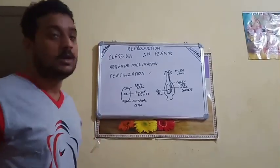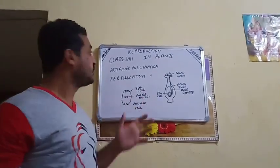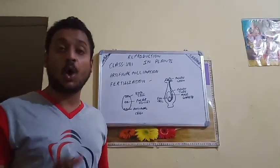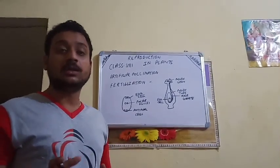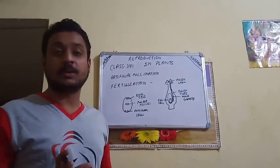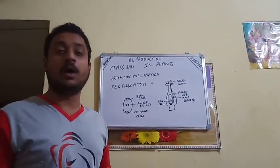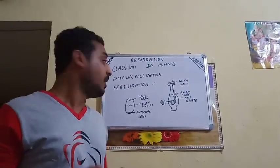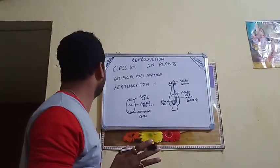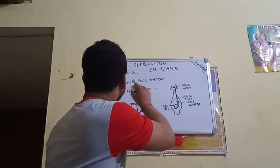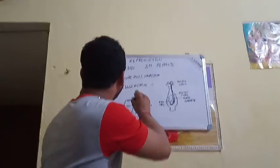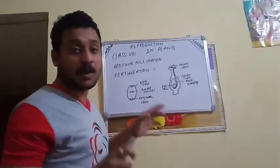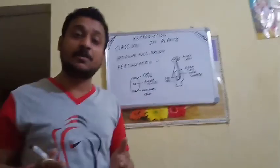A very good evening to you all. This video is for class 8. Yesterday we uploaded a video on the different topic of reproduction in plants — we uploaded the video on pollination. Today we will see about artificial pollination and fertilization, which is also part of reproduction in plants.